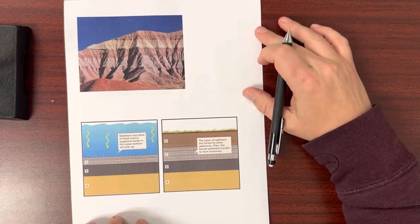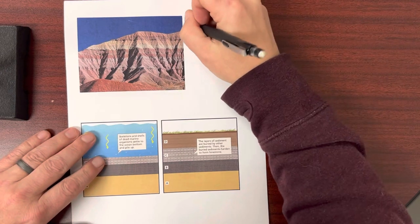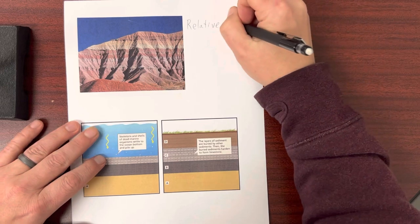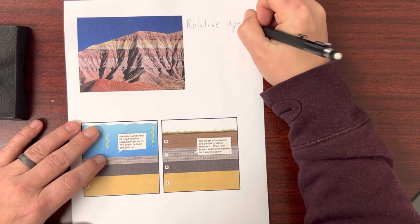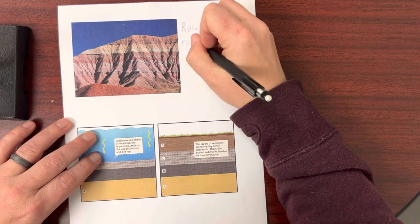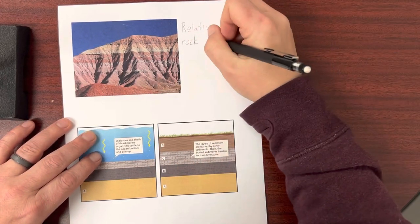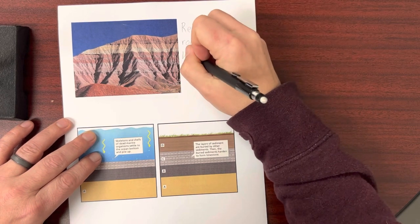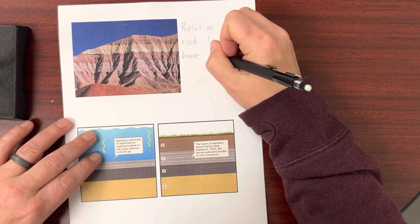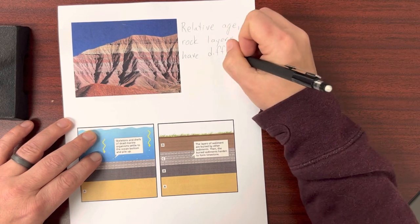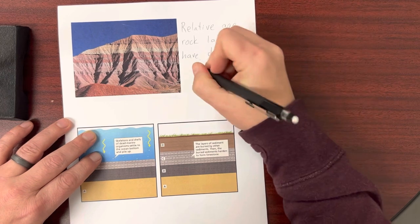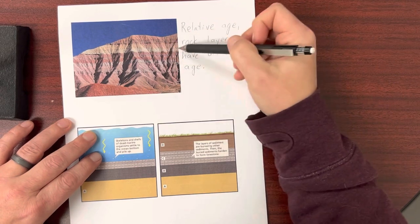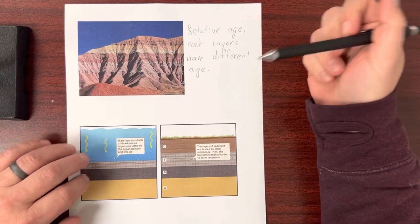Moving on from that, kind of adding to this idea, is this term relative age. And before modern techniques, people through all history had seen that there were layers, rock layers. And they would have different compositions, different colors, different rocks in them.